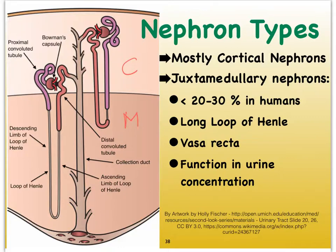These cortical nephrons cannot concentrate our urine, and they tend to produce more of an isotonic type of urine — in other words, not a concentrated form of urine, but a urine that has the same solute concentration as the blood instead.